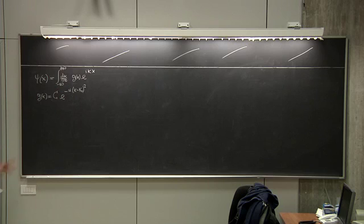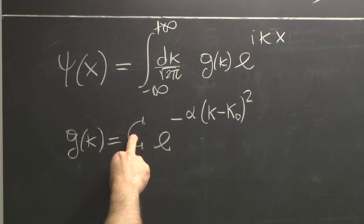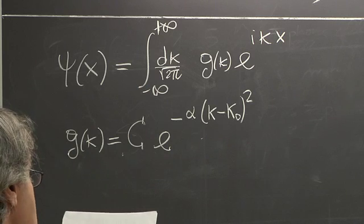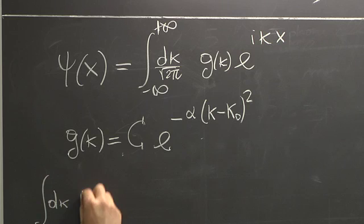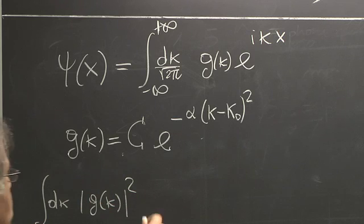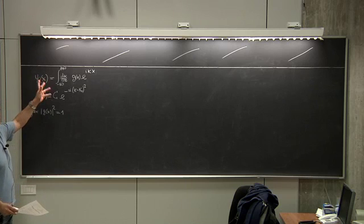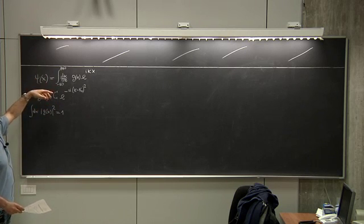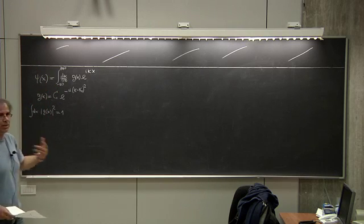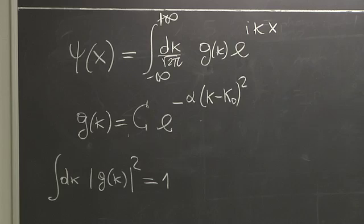We have to learn how to calculate this. I will choose C in order to normalize everything. The way we insist on normalizing things is: g of k is normalized such that the square modulus integrated over dk is 1. The reason why we insist on normalizing things with the square will be clear in a while — it's essentially related to the fact that it's not psi but psi modulus squared that determines the probability.